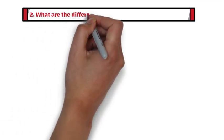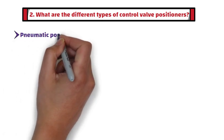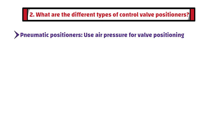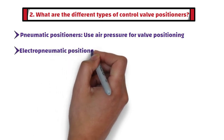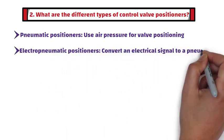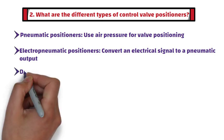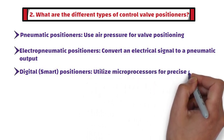Second question: What are the different types of control valve positioners? There are three main types. First, pneumatic positioners use air pressure for valve positioning. Second, electro-pneumatic positioners convert an electrical signal to a pneumatic signal. Third, digital or smart positioners utilize microprocessors for precise control and diagnostics.